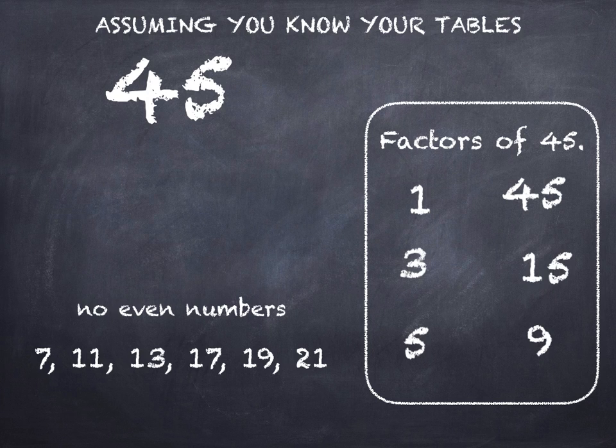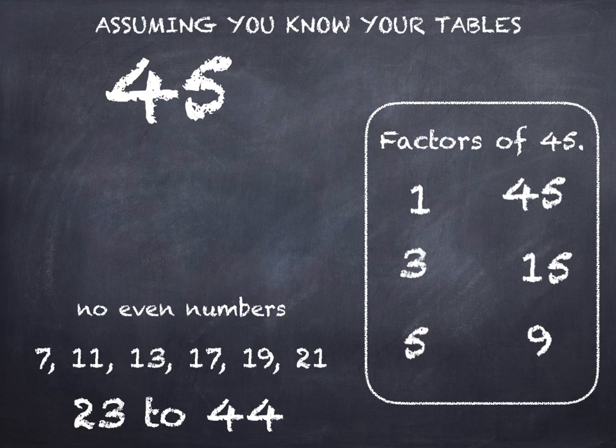There's the rest of the odd numbers, but none of those will divide exactly into 45 without remainders, so they're not factors. And anything over half, apart from 45 itself, won't be a factor either. So there we go. Factors of 45: 1 and 45, 3 and 15, 5 and 9.